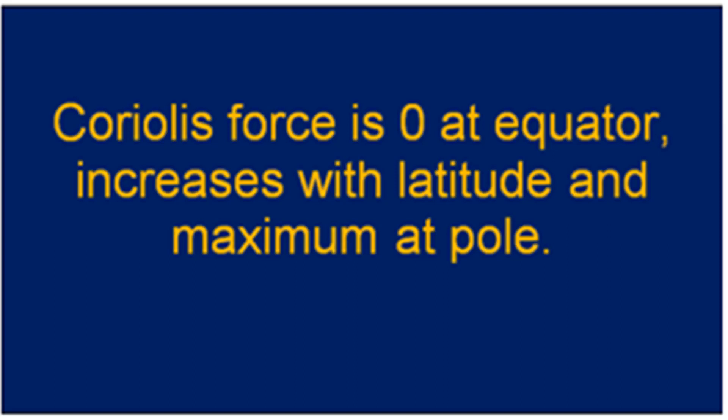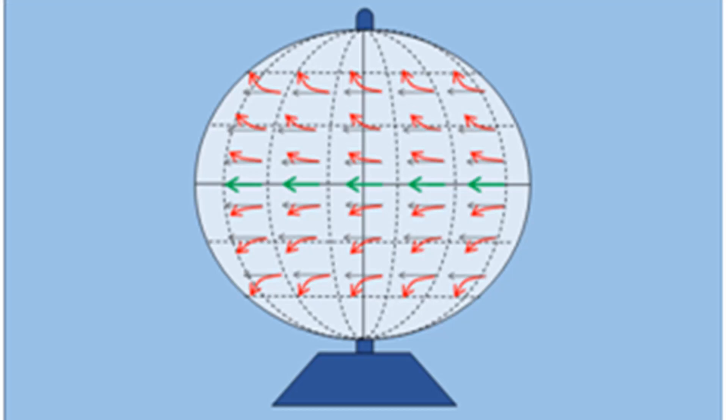The Coriolis parameter is very important — that is the reason a storm cannot generate very close to the equator. A minimum distance of 500 kilometers, roughly from 5 to 8 degrees latitude, is where cyclogenesis should take place.